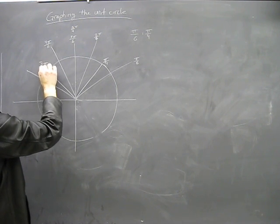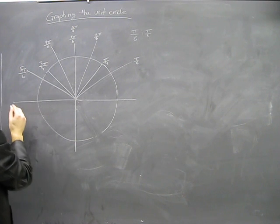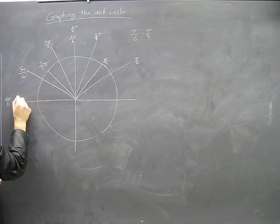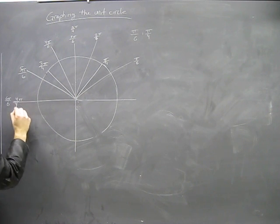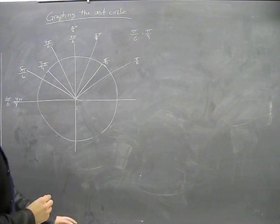3 pi quarters, 5 pi sixth. This here is 6 pi over 6 and also 4 pi quarters. Okay, they're the same thing.